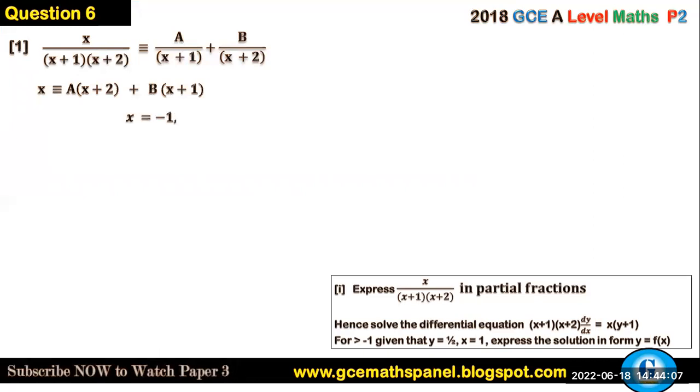You'll be left with x identical to A(x+2) plus B(x+1). Now at this point, if x equals -1, this will give us A to be equal to -1. And secondly, if x equals -2, we have B to be equal to 2.